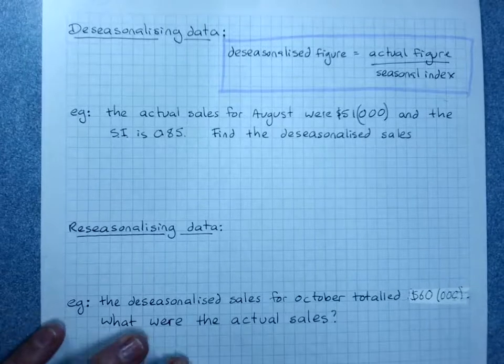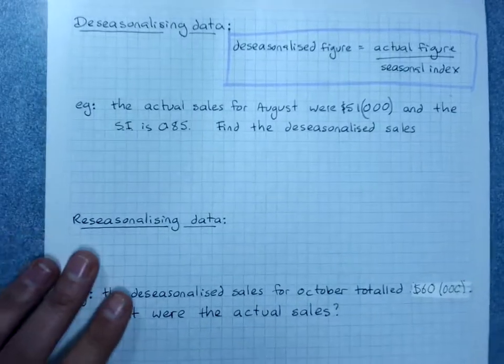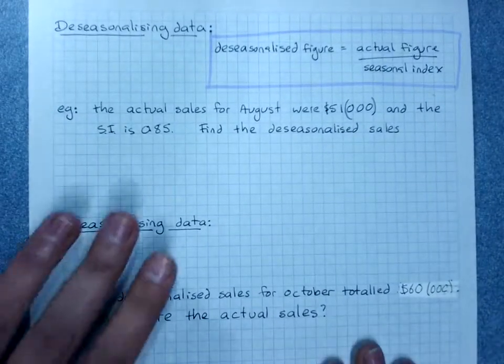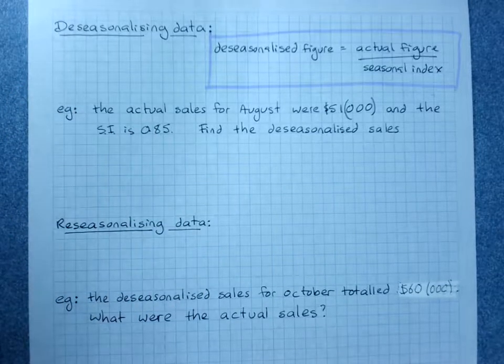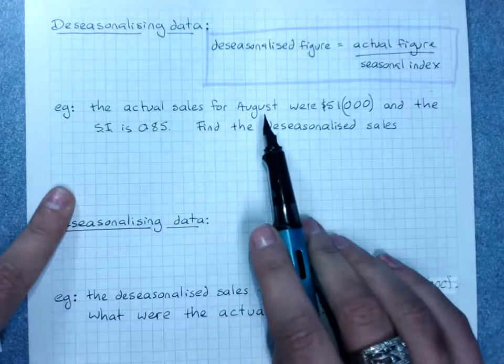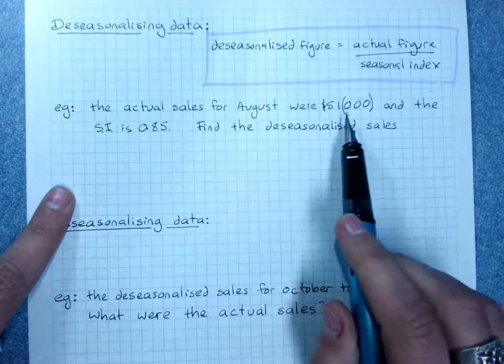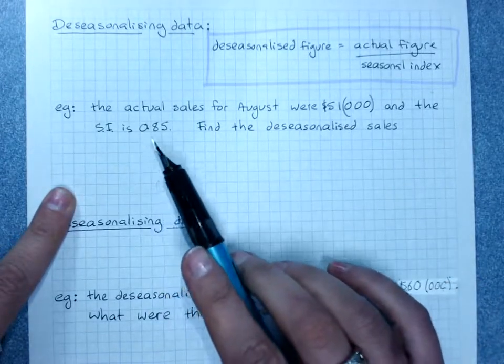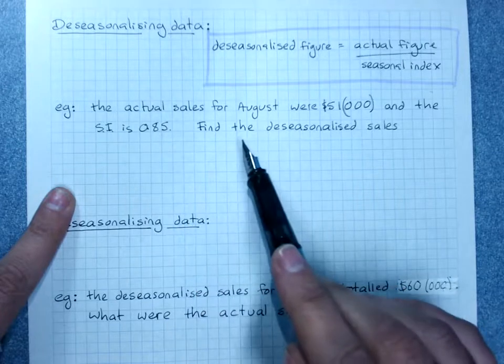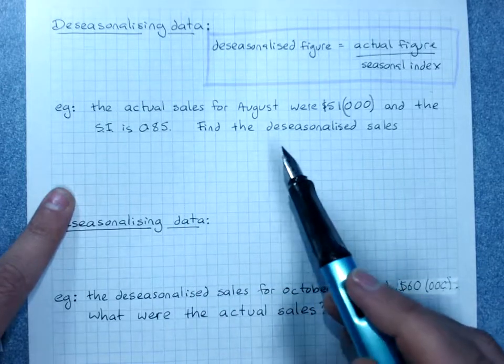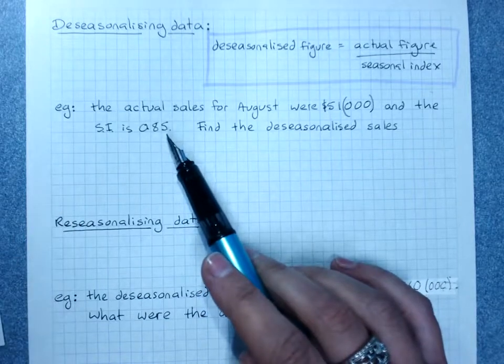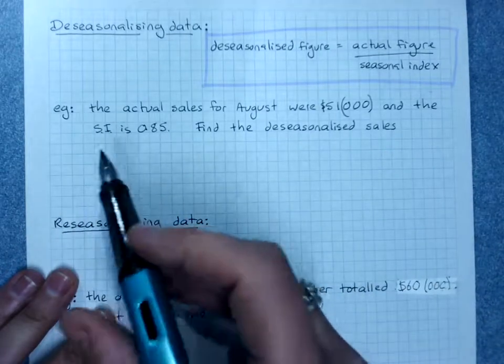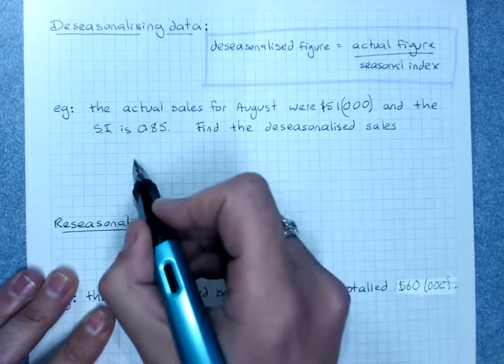So this is big important formula number one. Notice that we haven't learned how to calculate seasonal indices from data or anything like that - we will get to that. But we're just making sure we understand them and can use them first. So the actual sales for August were 51,000 and the seasonal index is 0.85. Find the de-seasonalized sales - so they're 15% below the average.